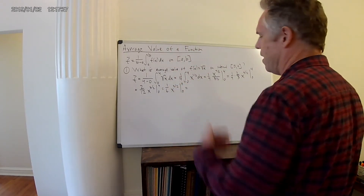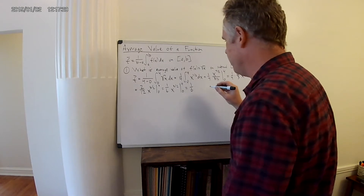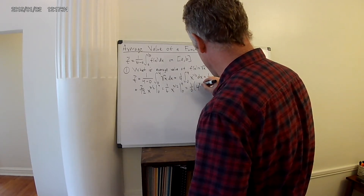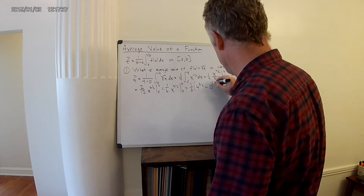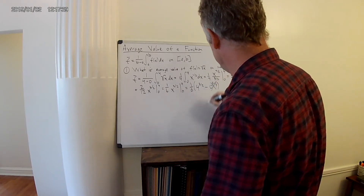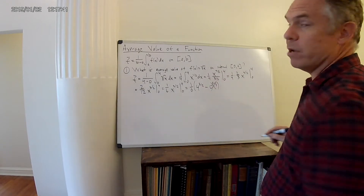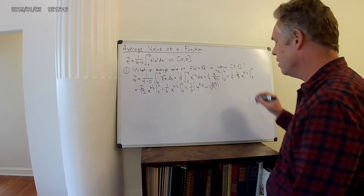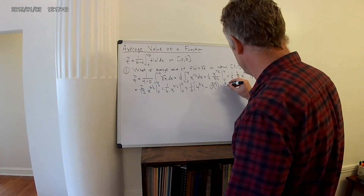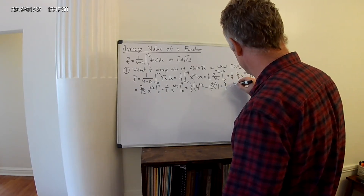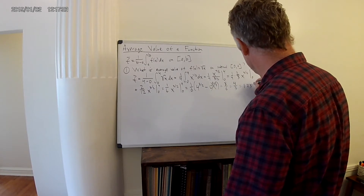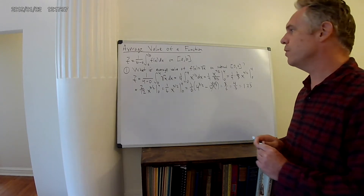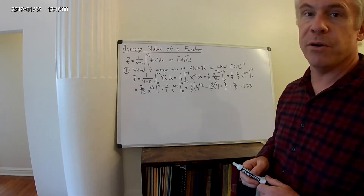Let's plug in the numbers. We evaluate at 0 and 4, and we get 4 to the 3/2 power minus 0 to the 3/2 power — that's just 0. For 4 to the 3/2, we take the square root first to get 2, then raise it to the 3rd power to get 8. So we get 8/6, which is 4/3, equals 1.33 repeating. That's the average value of the function square root of x on the interval 0 to 4.